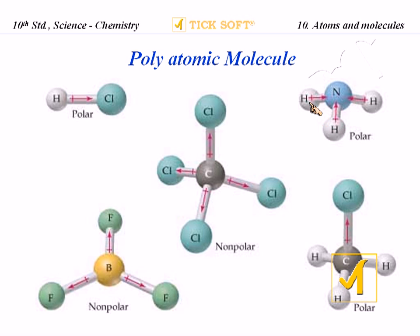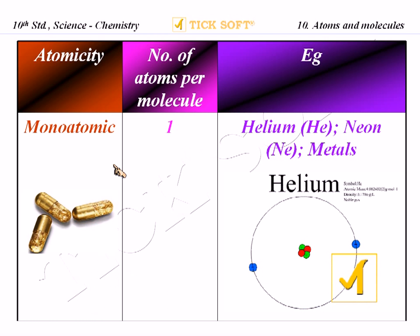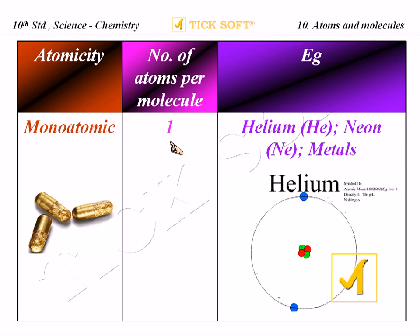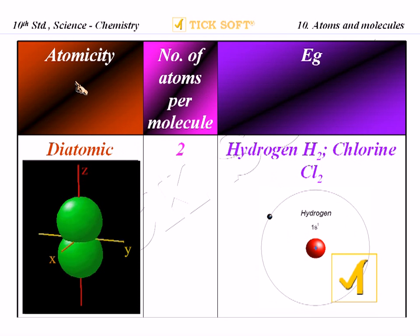Here is a summary table showing type of molecule, atomicity, and number of atoms per molecule. For monoatomic, the atomicity is one — examples include helium, neon, and most metals. For diatomic, the atomicity is two — the number of atoms per molecule is two.